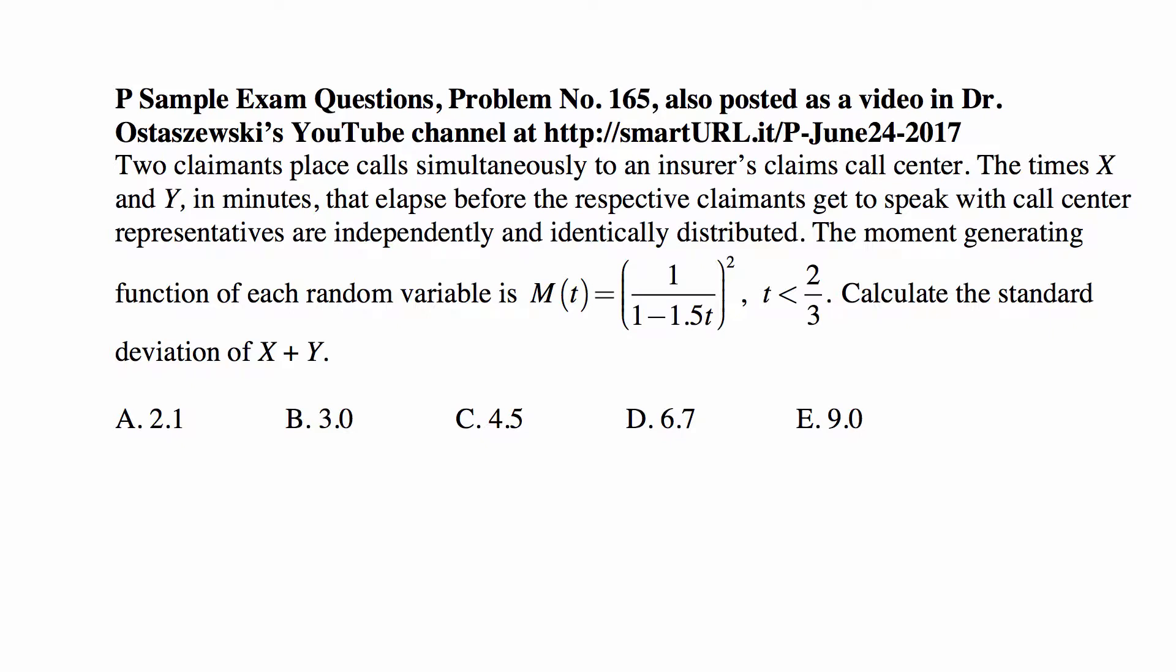One idea that should come to your mind is the moment generating function of a sum of two independent random variables is the product of their individual moment generating functions. And the standard deviation is the square root of the variance. So if you find the variance of that sum, then you will be okay. But the variance is the second moment minus the square of the first moment, and the moment generating function is named so because it generates moments.